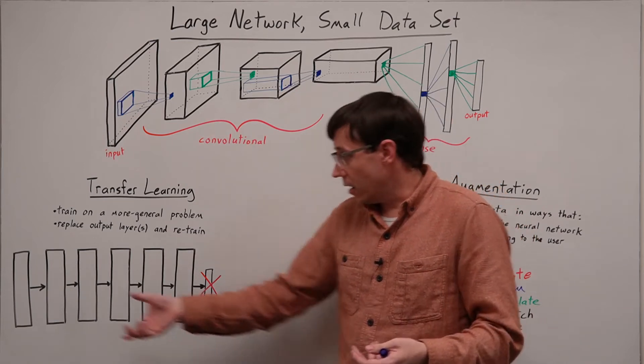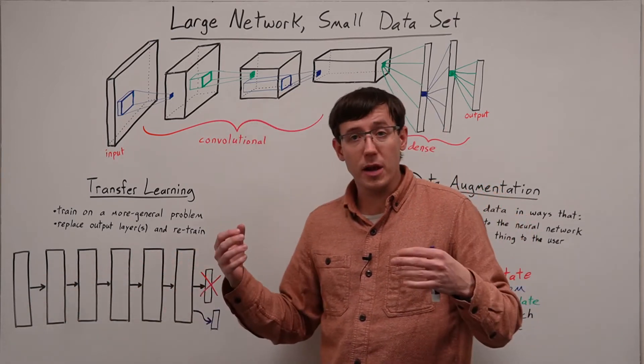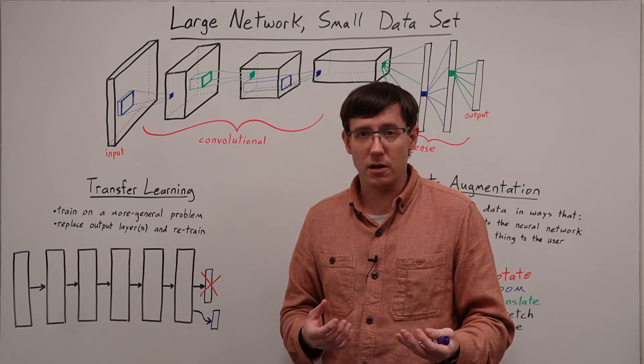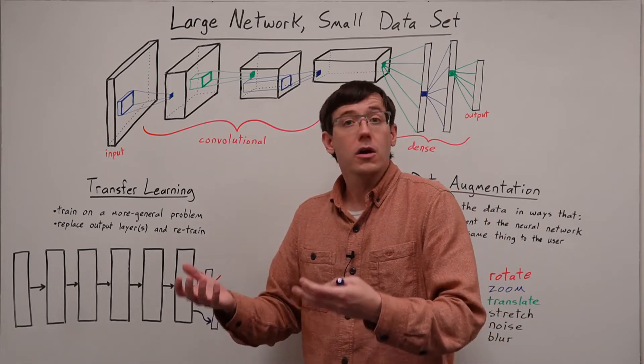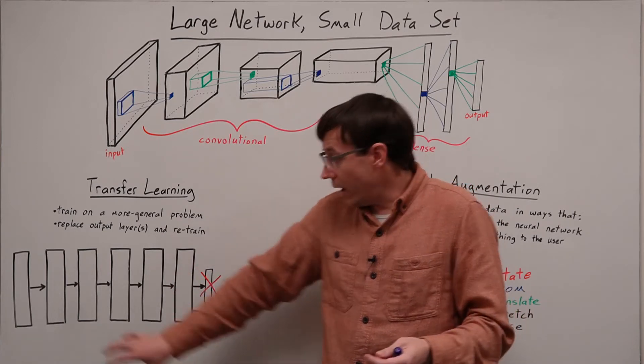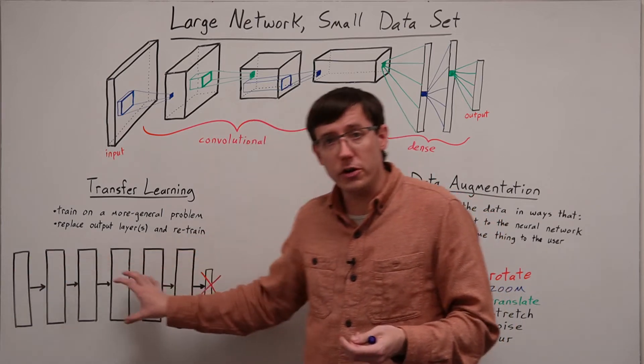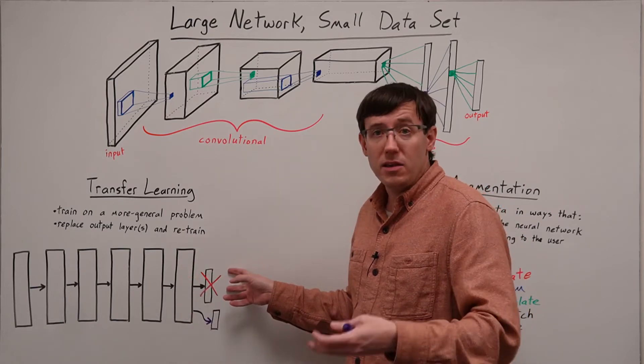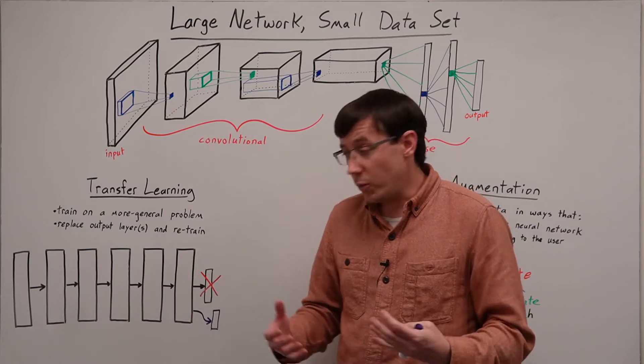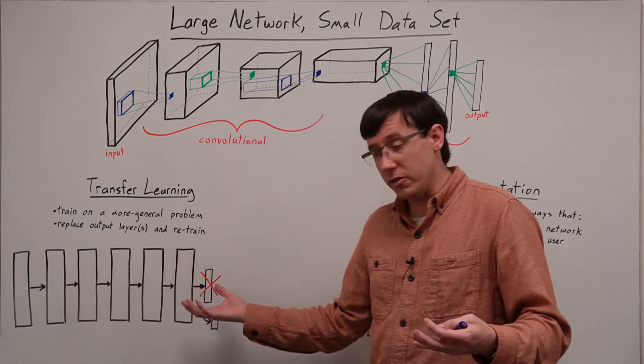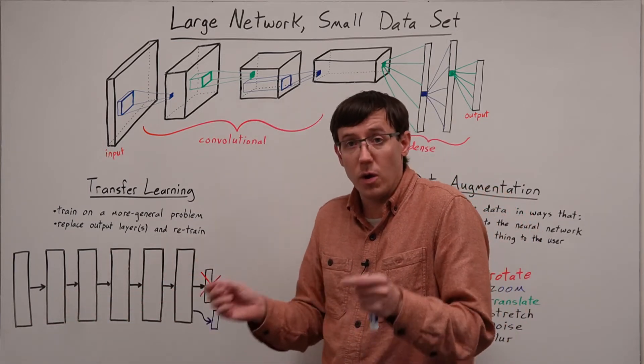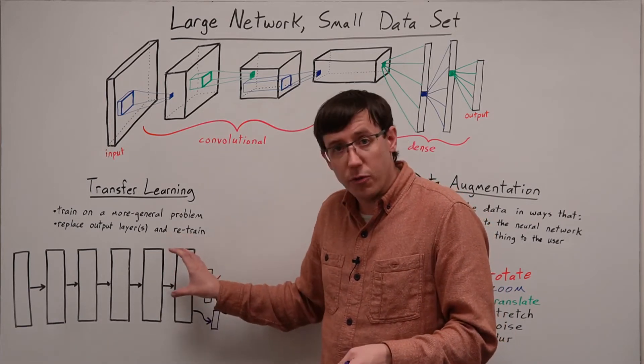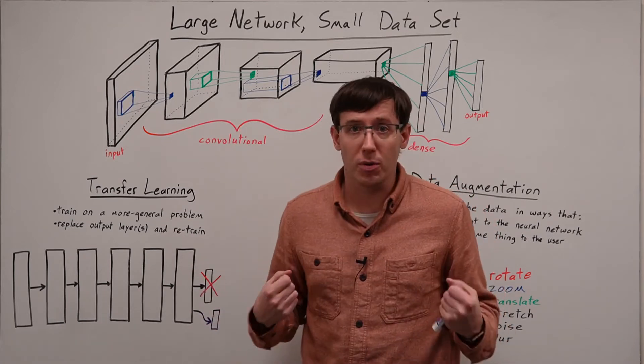And so we could think of all of these previous layers as a type of input transformation, a much more advanced version of giving a linear model quadratic inputs, where what all of these layers have learned to do is transform input images into something that can be easily classified. And so we can think of transfer learning as applying this learned transformation to our small dataset, and then learning how to go from the transformed inputs to the outputs for our problem.